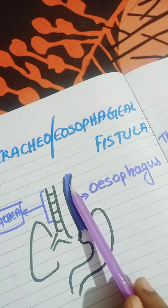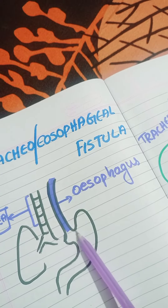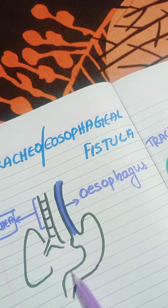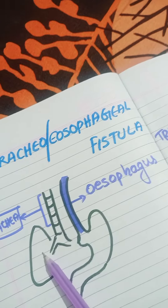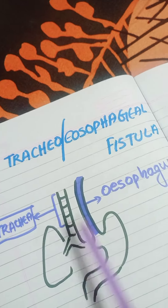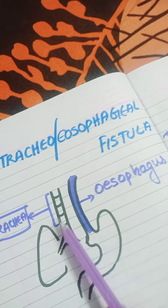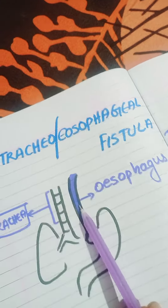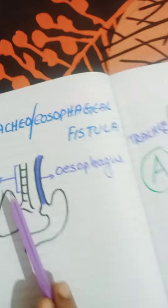This is the esophagus. Normally, as we go from trachea to esophagus, there is no connection between them. This is a congenital anomaly.